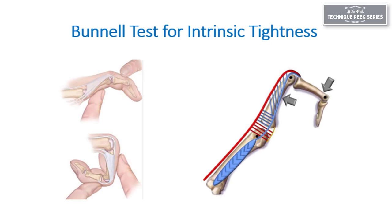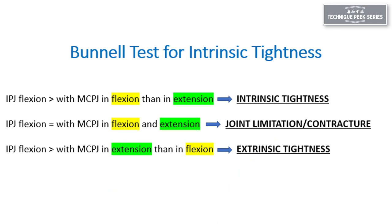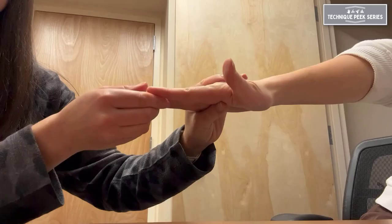To assess for the presence of intrinsic tightness, we use the Bunnell test. This test assesses IP joint flexibility with respect to the position of the MCP joint.